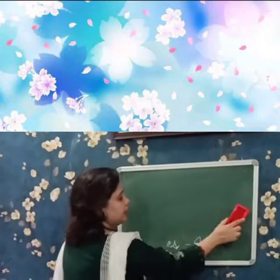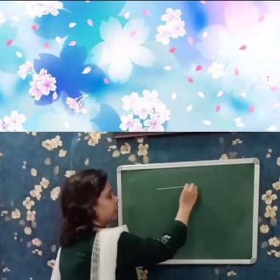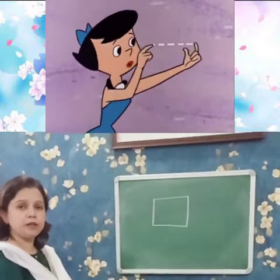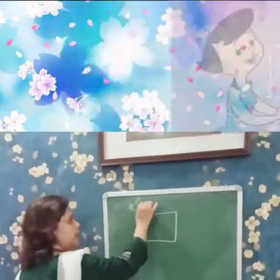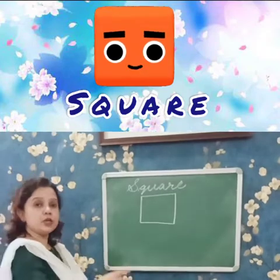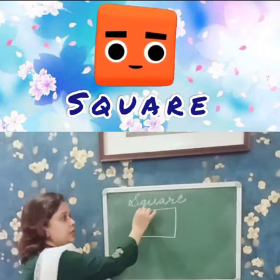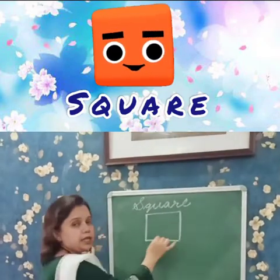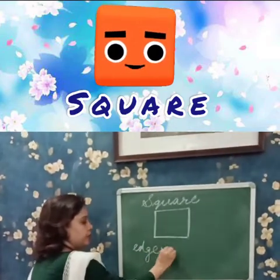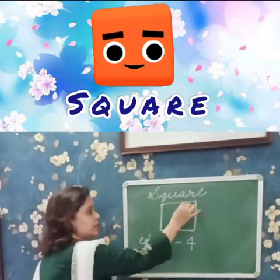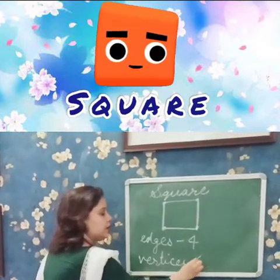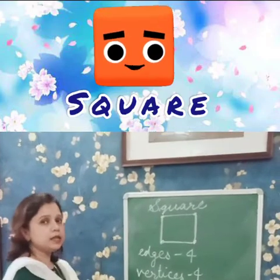Now let us see the other plane figure. This is the other plane figure we are going to learn about. Can you tell me what is this plane figure? It is a square — S-Q-U-A-R-E, square. Now a square has how many edges? It has four edges, just like the rectangle. And it has how many vertices? How many corners? Four corners. So like a rectangle, a square also has four sides and four corners.